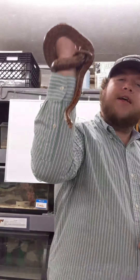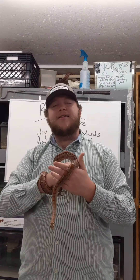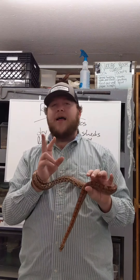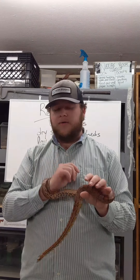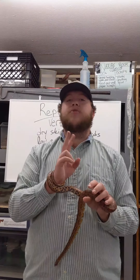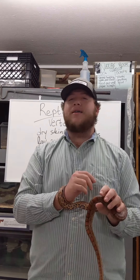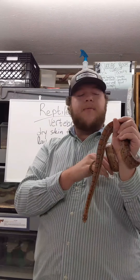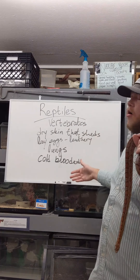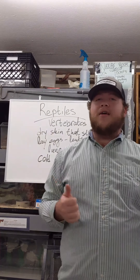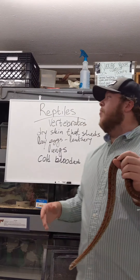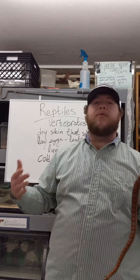Another cool feature of Bob is his forked tongue. He's always sticking it out because that's how snakes smell — they don't smell with their nose. His tongue is forked with two ends so he can detect which direction a smell is coming from. All of these core characteristics — vertebrate, cold-blooded, dry shedding skin, leathery eggs, lungs — apply to all reptiles, whether it's a snake, alligator, turtle, or lizard.